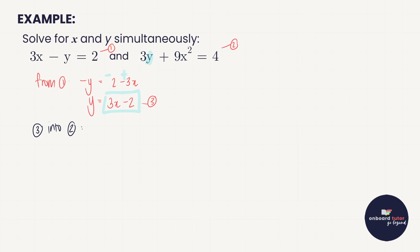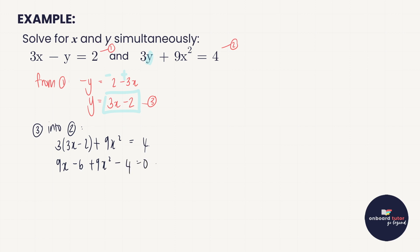Everywhere I have a y in equation two I substitute it with three x minus two. So we end up with three times (three x minus two) plus nine x squared equals four. Expanding: nine x minus six plus nine x squared equals four. Moving the four over, we get nine x squared plus nine x minus ten equals zero.